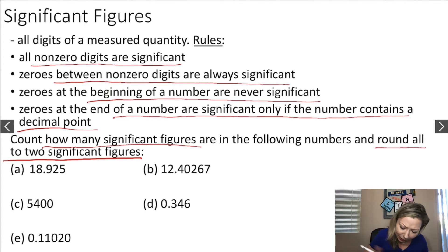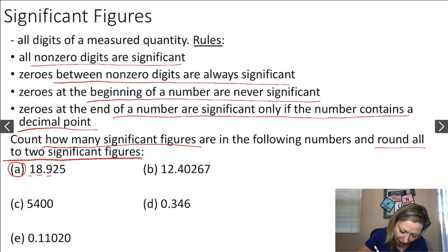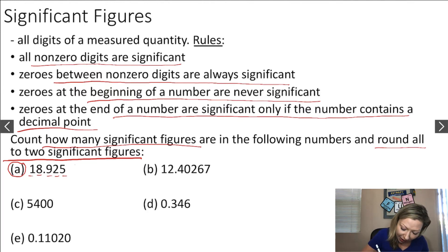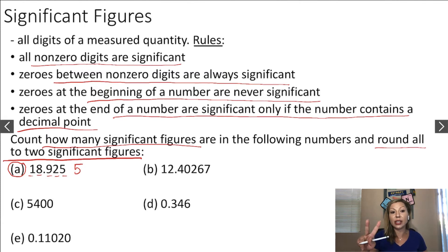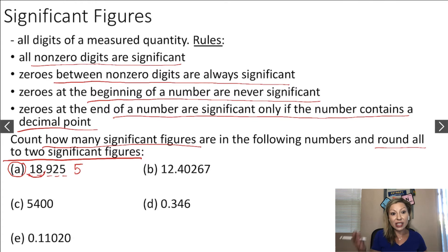Let's look at example A. All non-zero digits are significant — we have 1, 2, 3, 4, 5 non-zero digits and no zeros at all. So this number has five significant figures. To round it to two significant figures, the third significant figure is a 9, so I have to round up. The rounded number is going to be 9T.